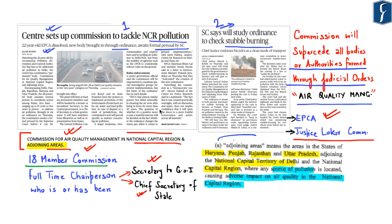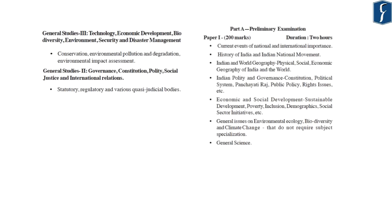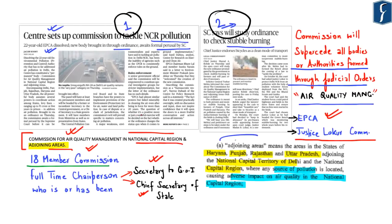These news items appearing on page numbers 1 and 2 are very important from the perspective of prelims as well as mains examination. In prelims, this topic is covered under general issues on environmental ecology, biodiversity and climate change. In mains, it is covered under GS Paper 3 under environmental pollution and degradation, and in GS Paper 2 with respect to statutory, regulatory and various quasi-judicial bodies.